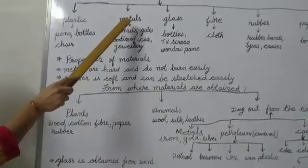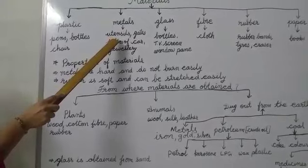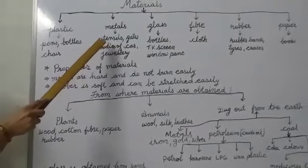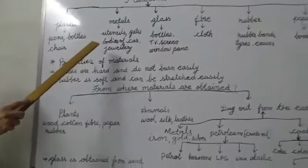Metals. By using metals, we make utensils. Now, what are utensils? Utensils means the things that your mother used to cook food in the kitchen.